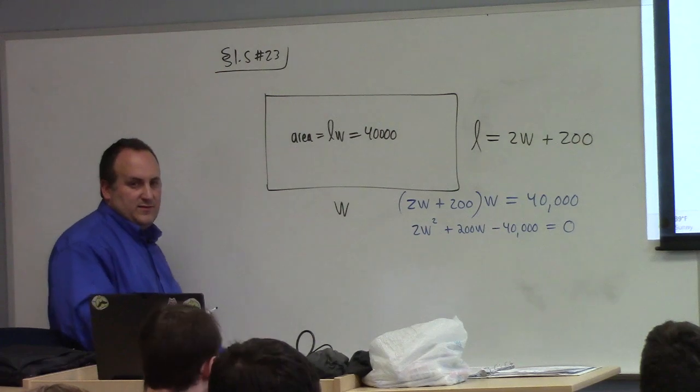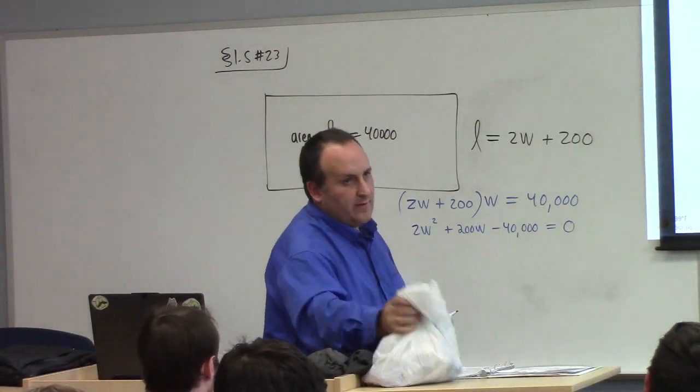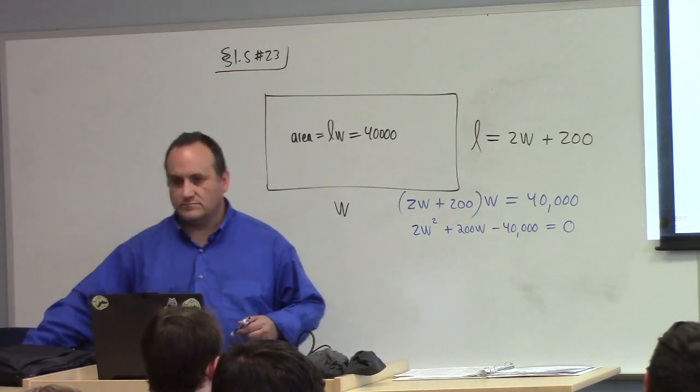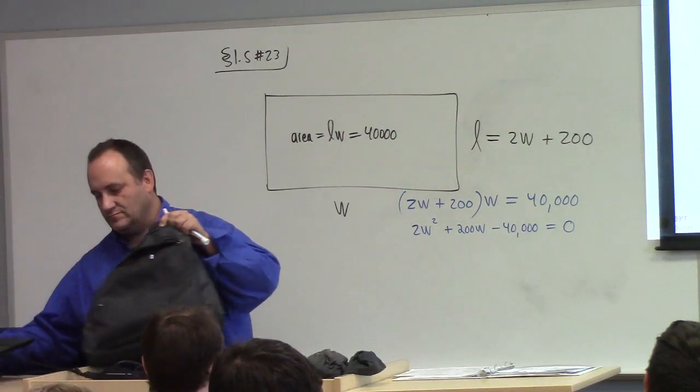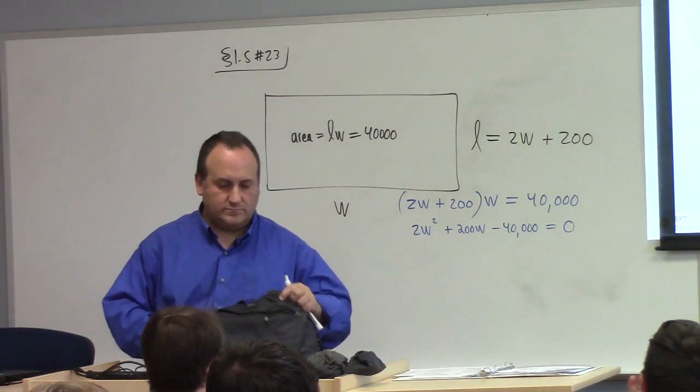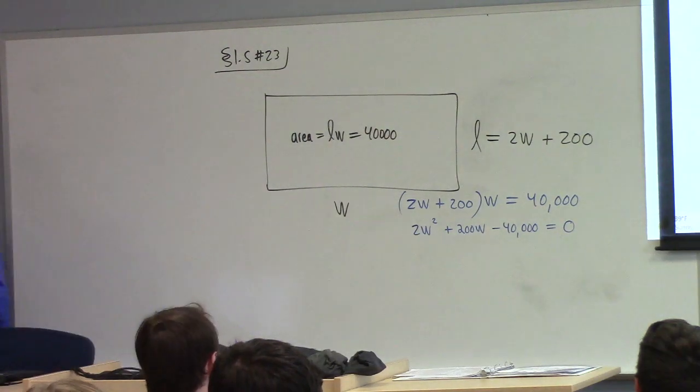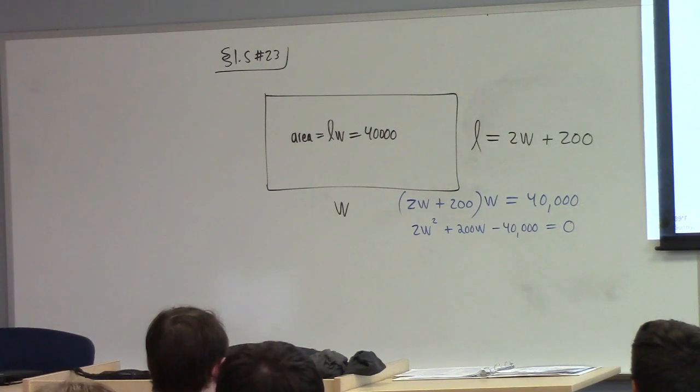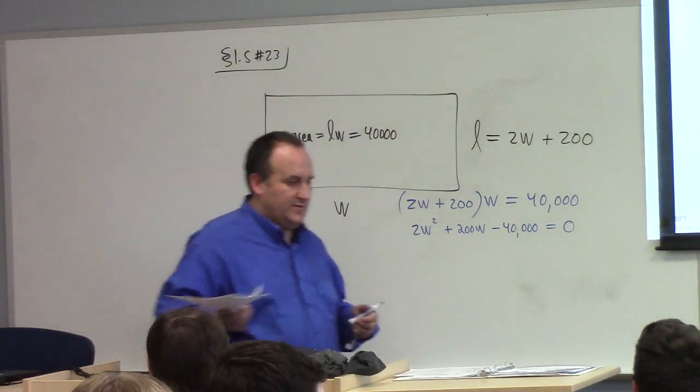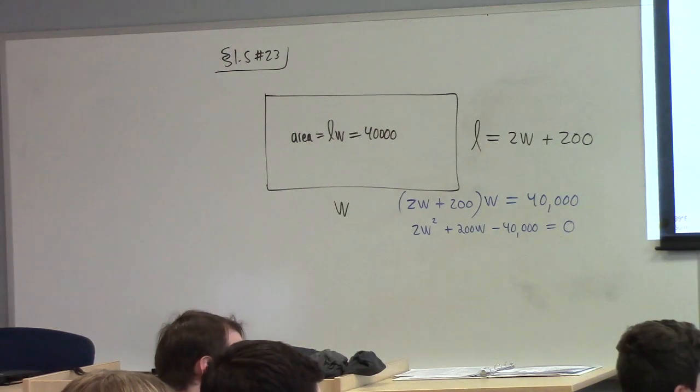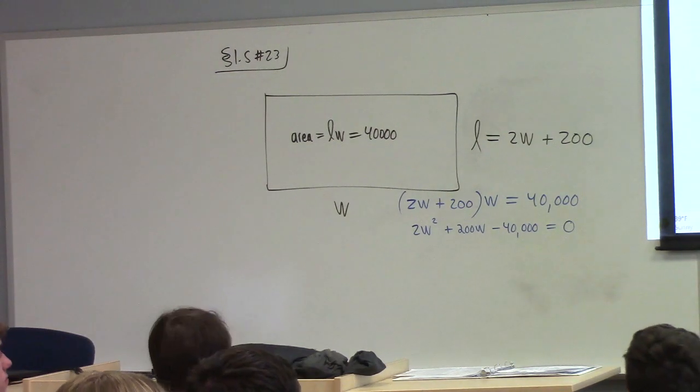This is going to give us 2w squared plus 200w minus 40,000 equals zero. I highly recommend that we do not solve that equation yet. What should we do? Complete the square is a good idea. But before we do that.